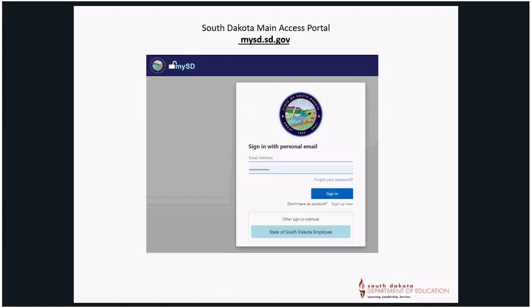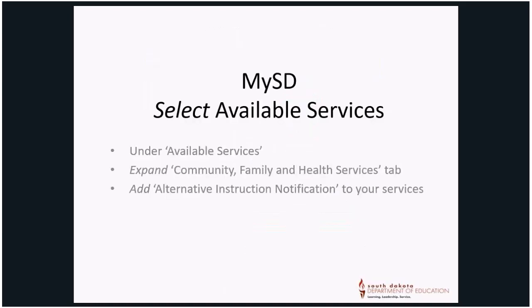If you are a mySD user who has already set up an account at mysd.sd.gov, simply log in. When in mySD, select Available Services and expand the Community, Family, and Health Services tab. Add Alternative Instruction Notification to your services. Doing this should take you to the Alternative Instruction Notification Reporting System.